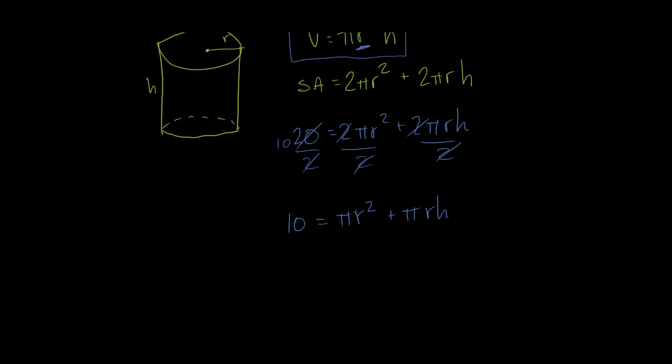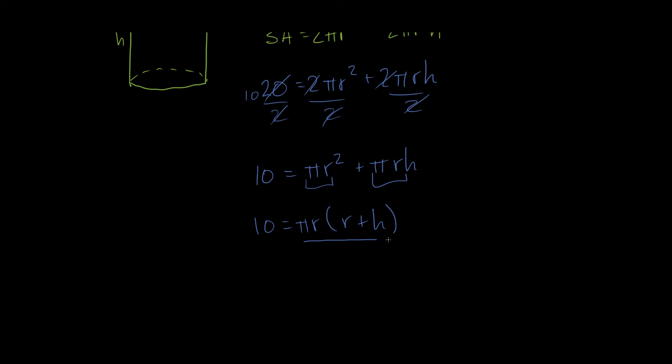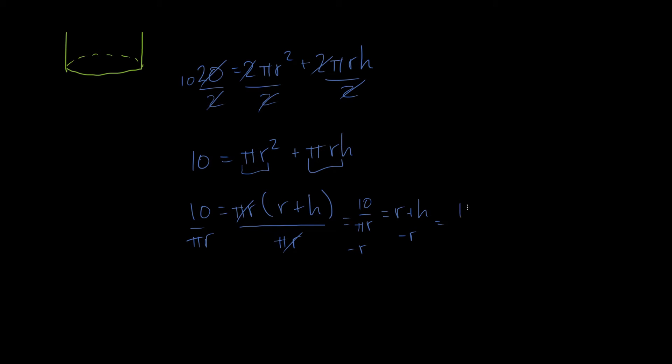Now what I can do, these both have a pi r in them, right? So I can factor that out and get 10 is equal to pi r, and then I have an r plus h left over. I can divide both sides of this by pi r, and then this cancels out, and I'm left with 10 over pi r is equal to r plus h, and then I can just subtract r from both sides. And that gives me 10 over pi r minus r equals h.